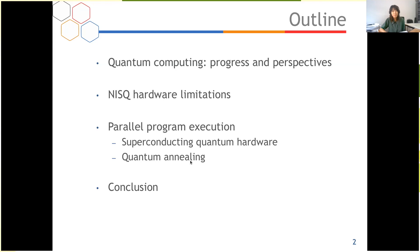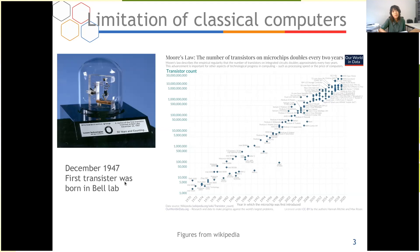The first transistor was born in Bell Lab in 1947. Since then, classical computing has made huge progress. According to the famous Moore's law, the number of transistors on the processor doubles every two years. However, there is a limitation — we cannot reduce the size of the transistor forever, and too many transistors can cause too much energy consumption. So a new computing paradigm is needed.